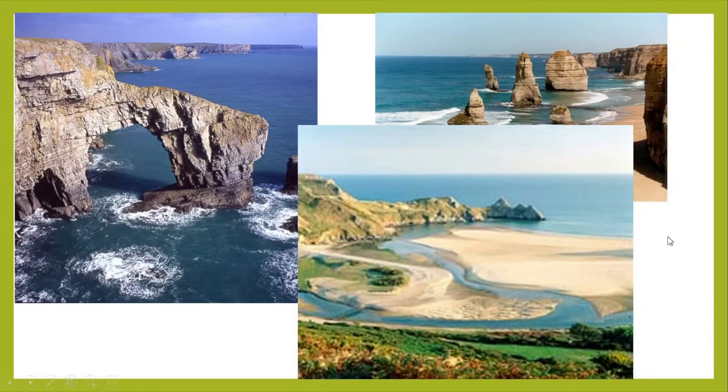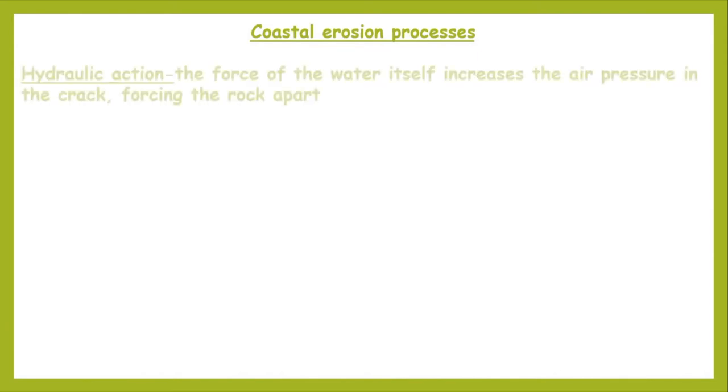First subheading: Coastal Erosion Processes. If we were in school, I'd encourage you to write these down again, even though they're the same processes that happen in the river and we wrote them down during that lesson — it doesn't do any harm to get them down again in this context.